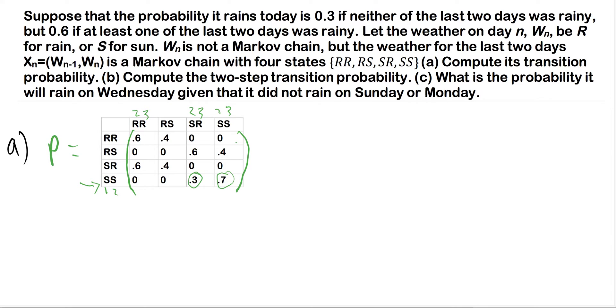So now moving on, it says, but 60% if at least one of the last two days was rainy. So here again, we could take any one of these. Let's start with SR. Here's day one and day two. So out of the last two days, if we've already moved on to our third day, at least one of them has to be rainy. So here we have both are rainy.